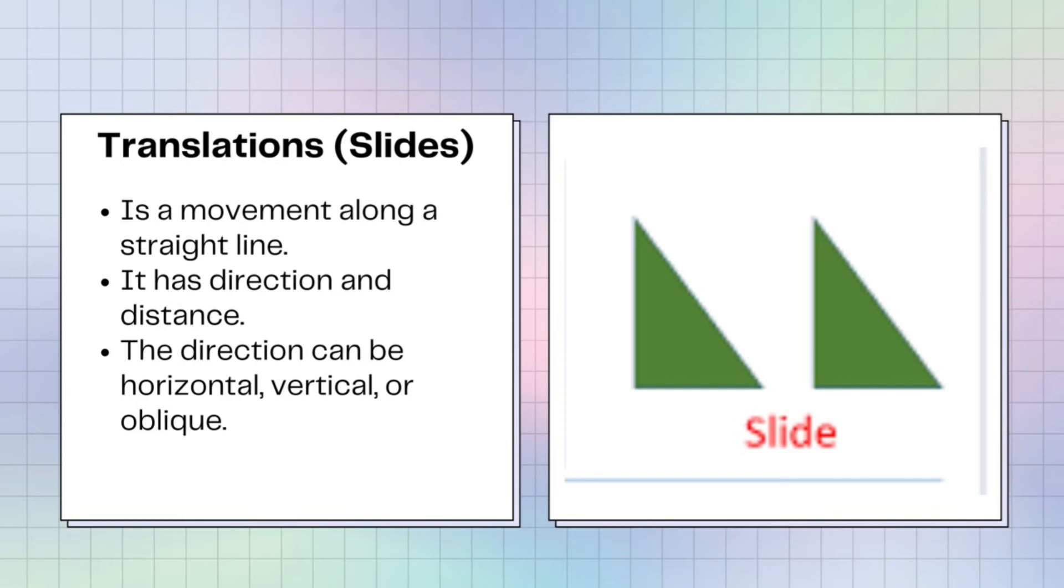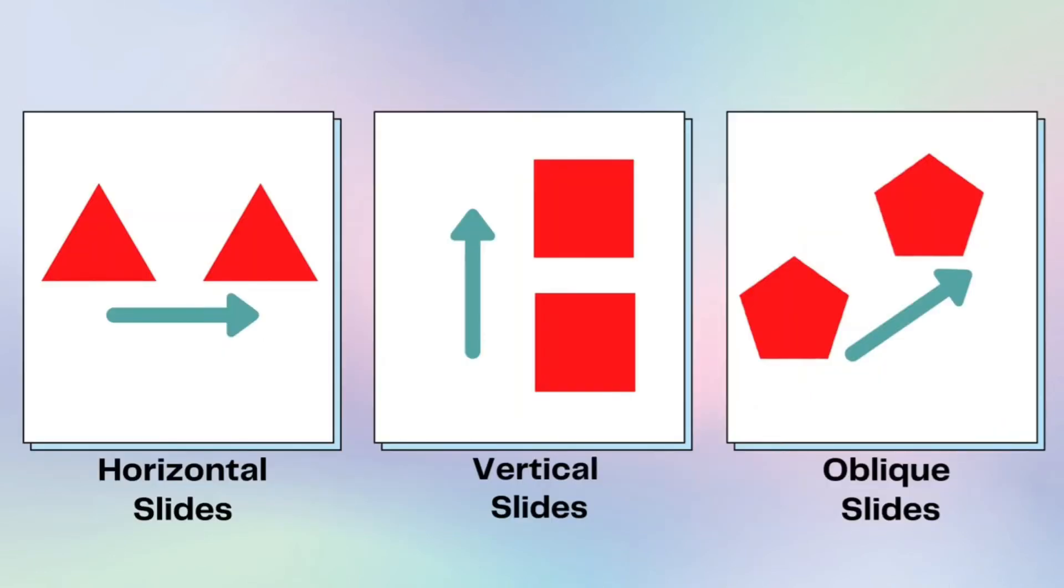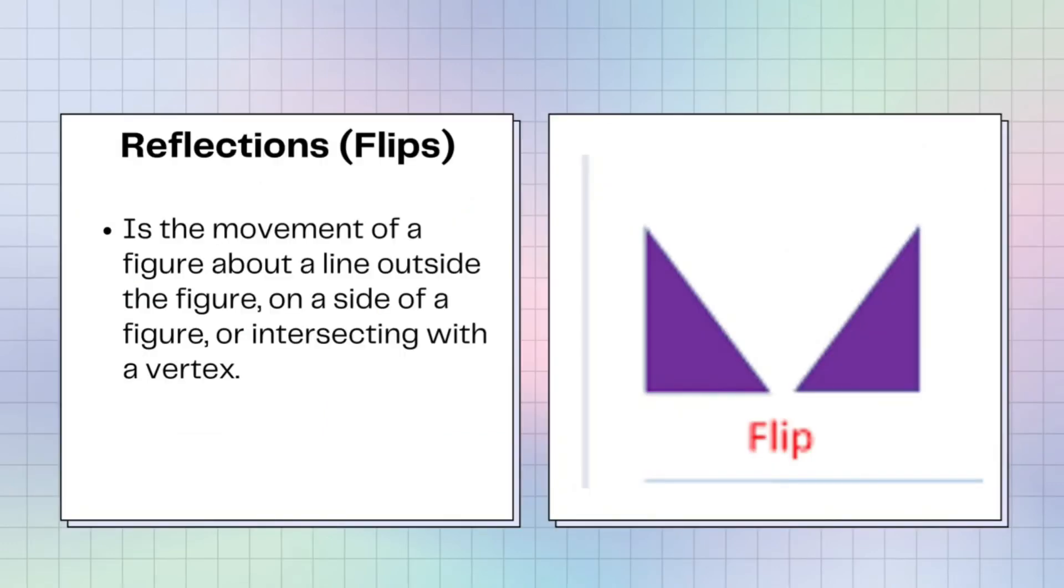Second is reflections or flips. The last one is rotation or turns. What is translation or what we call slides? Translation is a movement along a straight line. It has a direction and distance. The direction can be horizontal, vertical, or oblique. Here are some other examples of translation. The first one follows a direction horizontal, second is vertical and the third is oblique.